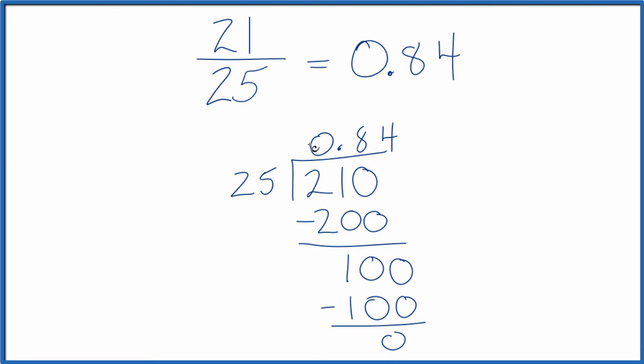So 21 divided by 25 is 0.84. That's what we found earlier. So the fraction 21 over 25 equals the decimal 0.84. This is Dr. B, and thanks for watching.